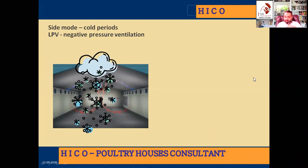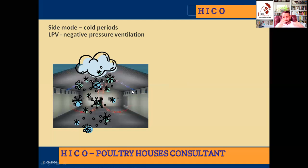Looking at this picture, you can see side mode ventilation. The minimum ventilation is also a side mode ventilation but it is timer-based. Keep in mind that in timer-based ventilation the fan runs on a timer, while in side mode ventilation the fan runs thermostatically. Side mode ventilation occurs when the outside temperature is slightly higher — one, two, or three degrees — than inside the house.